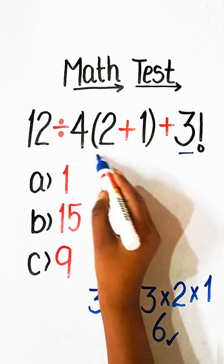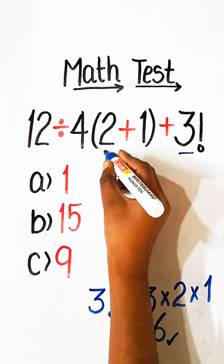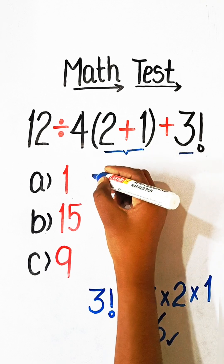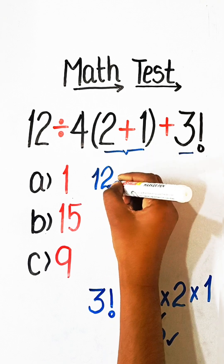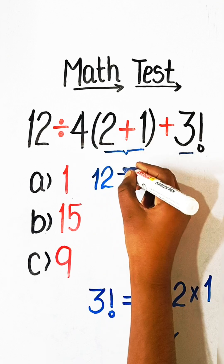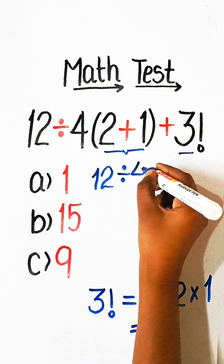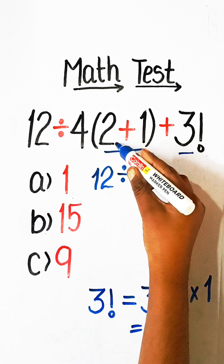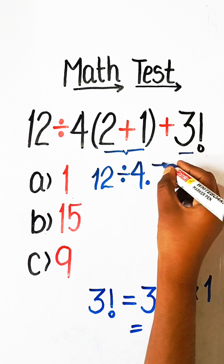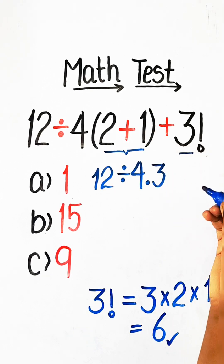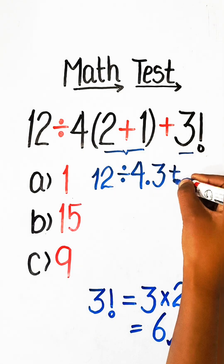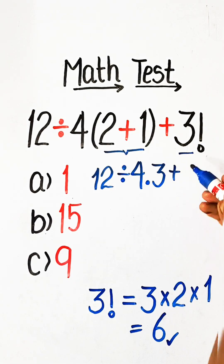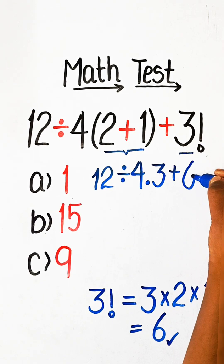So, we will solve this equation. First, we have to solve the bracket part. So, we will write here: 12 divided by 4, multiplied by 2 plus 1 is 3, plus the value of 3 factorial which is 6. So, we will write 6.